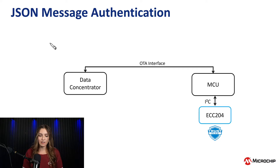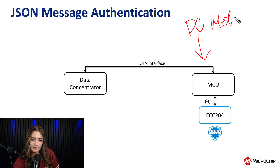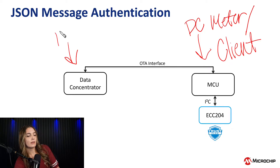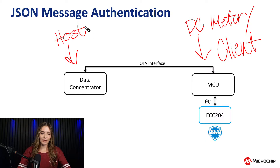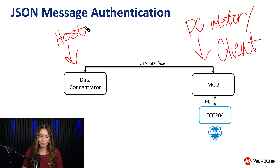Here we have our use case architecture. On this side, we have our DC meter that is going to act as our client device. Then on this end, we have our host, which is our data concentrator, which will likely communicate to the DC meter over the air. In this use case, you really only need a secure IC on the DC meter because your data concentrator will likely have the computational power to run these cryptographic algorithms.